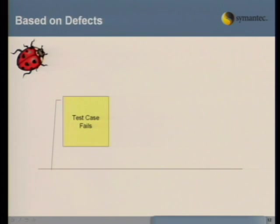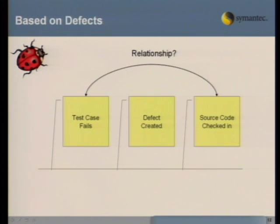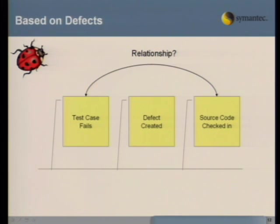A very similar situation with defects. Let's say you have a new build, QA starts testing, and a test case fails. A defect will be created and source code will be checked in to fix it. From there you can say, if a test case fails and source code is checked in to fix that failure, you probably have a relationship — so the next time that source code is checked in, you can say: last time this was checked in, these test cases failed. It's probably a good idea to run these test cases again.